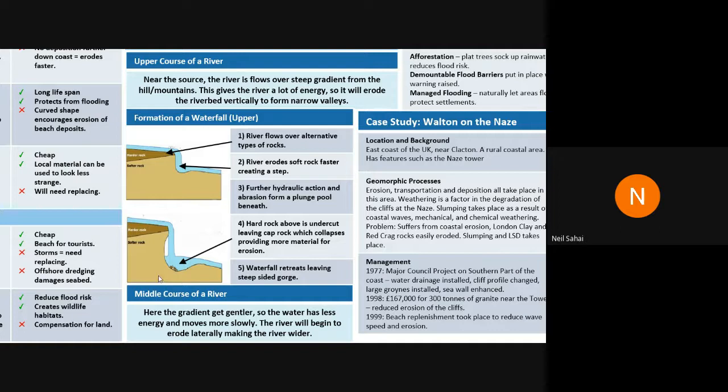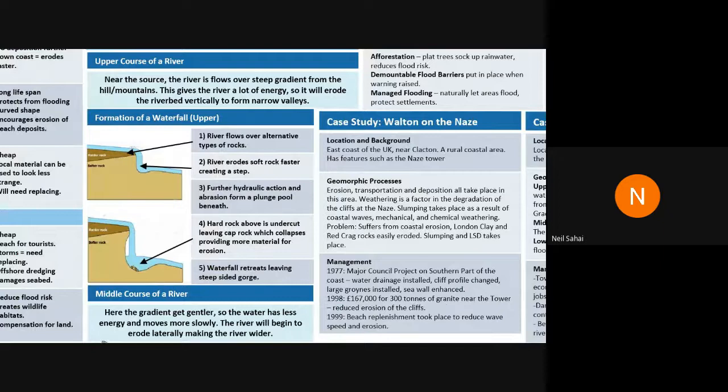As the waterfall cuts back through the landscape, it leaves a steep-sided gorge — a valley with steep straight sides. In the upper course you might also find human activity such as dam building, because of the available water and valley size. The material in the upper river is large, angular, and sharp — it hasn't had time to smooth down, and all the energy is focused on cutting downward.